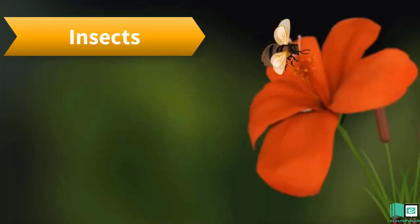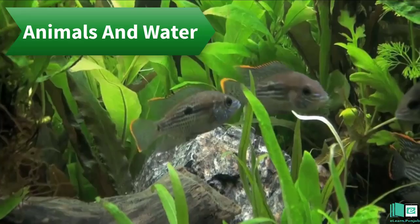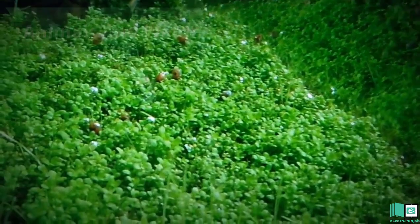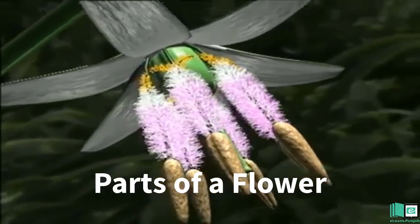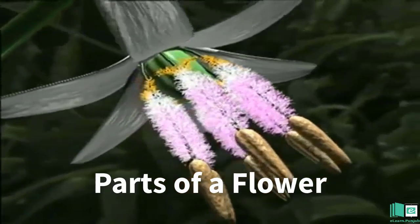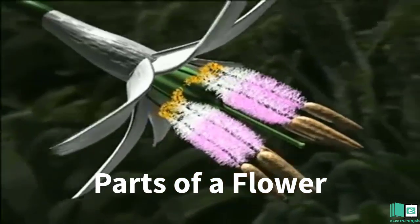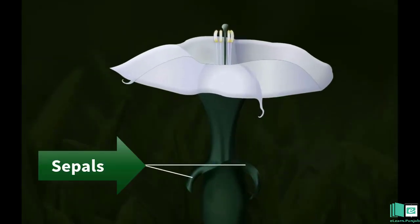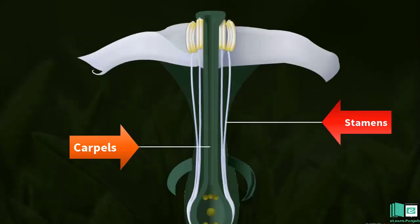Wind, insects, animals, and water are the agents for pollination in different plants. Parts of a Flower: Most flowers have four main parts, i.e. sepals, petals, stamens, and carpels.